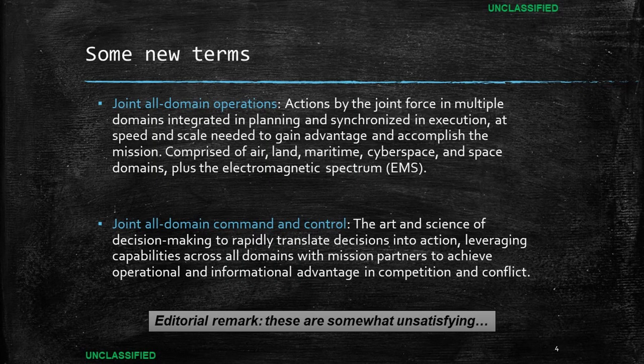Air Force Doctrine Annex 3-99 defines Joint All-Domain Operations as actions by the Joint Force in multiple domains integrated in planning and synchronized and executed at speed and scale needed to gain advantage and accomplish the mission — comprised of air, land, maritime, cyberspace, and space domains, plus the electromagnetic spectrum — and JADC2 as the art and science of decision-making to rapidly translate decisions into action, leveraging capabilities across all domains with mission partners to achieve operational and informational advantage in competition and conflict. Some have described these definitions as unsatisfying, so if you feel that way, you're not alone.